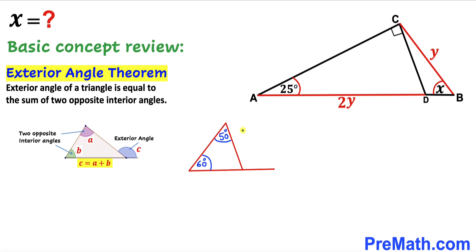As an example, the exterior angle equals the sum of the two opposite interior angles, so 50 plus 60 gives us 110 degrees.